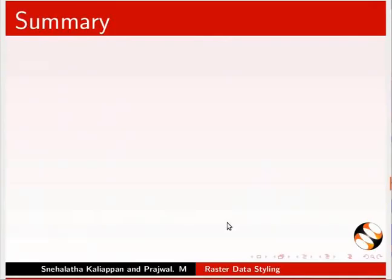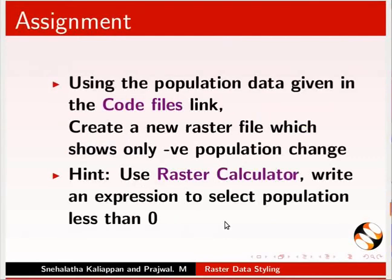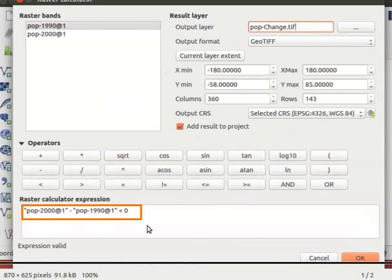Let us summarize. In this tutorial, we have learnt to style a continuous raster, to write an expression in raster calculator, and about raster properties. As an assignment, using the population data given in the code files link, create a new raster file which shows only negative population change. Hint: use the raster calculator and write an expression to select population change less than 0.